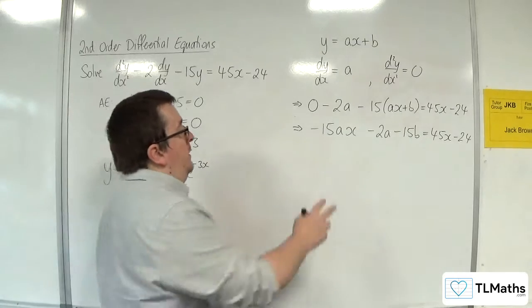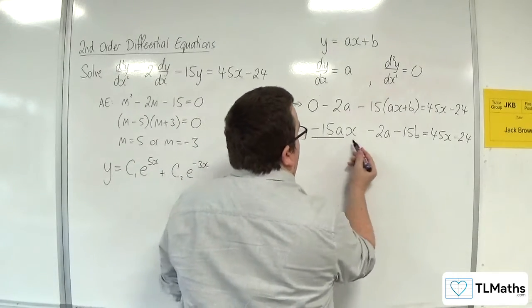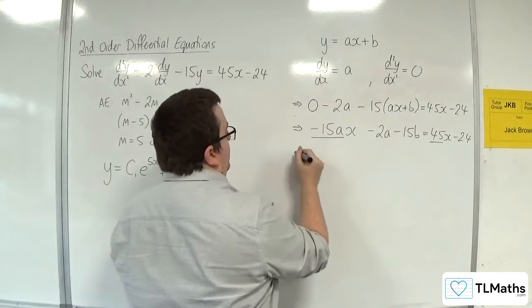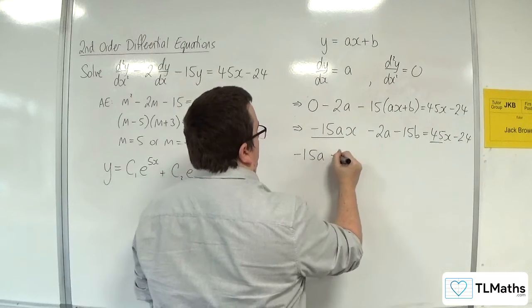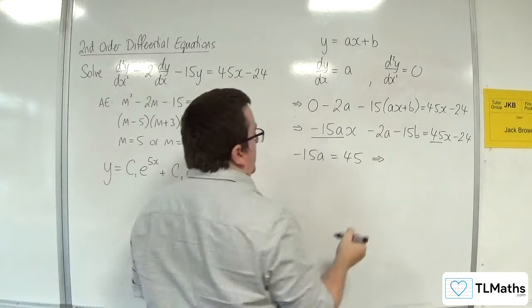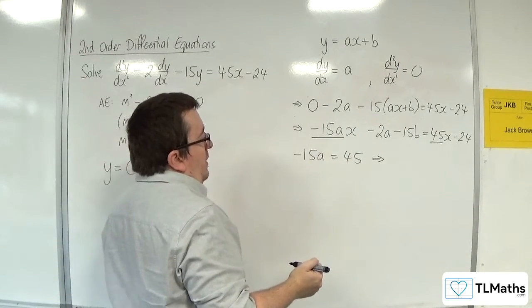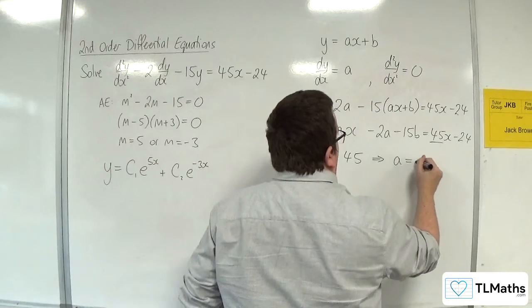So comparing coefficients, the -15a has got to be the same as the 45. So dividing both sides by -15, we're going to get a = -3.